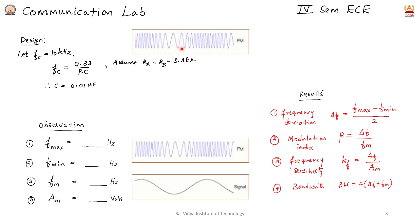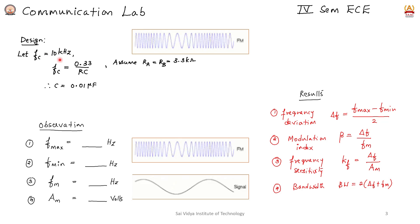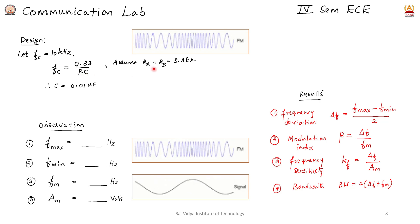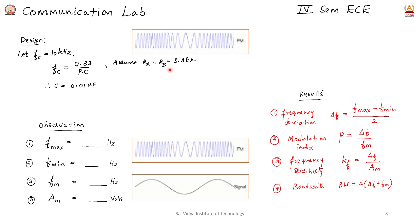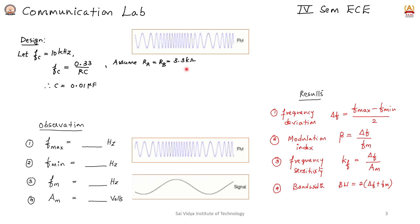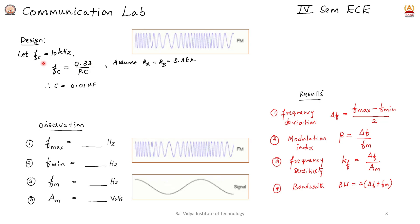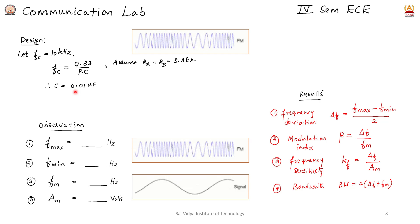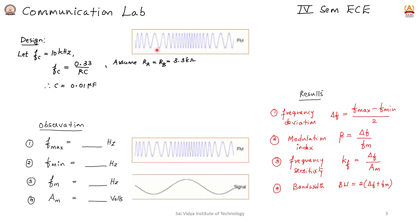Here we consider the carrier frequency as 10 kilohertz. By assuming a resistance of 3.3 kilo-ohms, we calculate the required capacitor to be connected for the IC to generate a carrier frequency of 10 kilohertz.